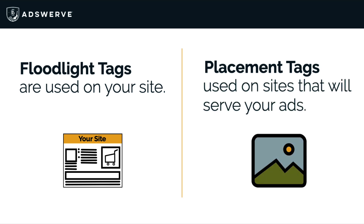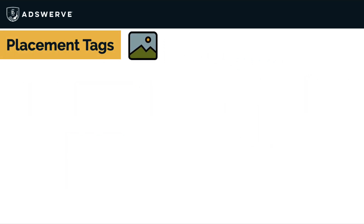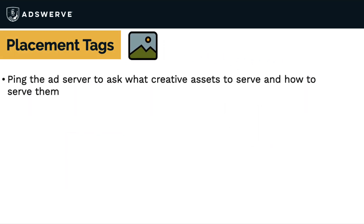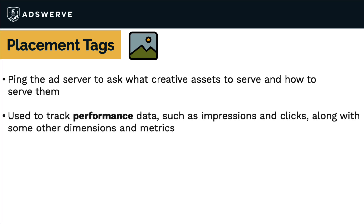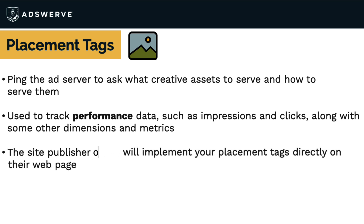That explanation might be confusing, so let's get more granular. Placement tags are the ones that ping an ad server to ask what creative assets to serve and how to serve them. They track performance data, such as impressions and clicks, along with some other dimensions and metrics. Your publisher will implement your placement tags directly on their webpage. Depending on your integration, these tags may also be pushed or uploaded to a programmatic demand-side platform, or DSP, like Display and Video 360.